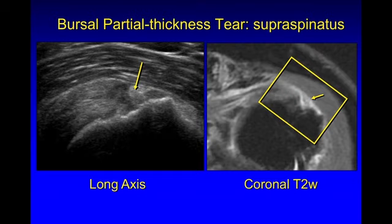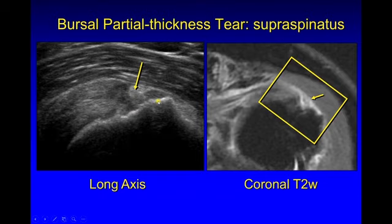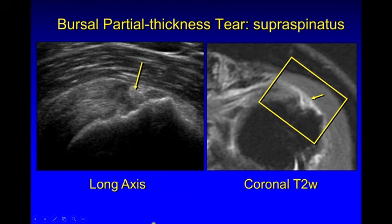Here in contrast is a partial thickness bursal-sided tear of the supraspinatus. If you look at the more superficial fibers of the supraspinatus, it should be convex superiorly, but instead there's a triangular defect touching the bursal surface extending to the greater tuberosity, also shown on MRI as fluid signal. The problem with these bursal-sided tears is that the defect tends to fill with more echogenic bursal thickening or synovitis, which also shows intermediate signal on the MRI.